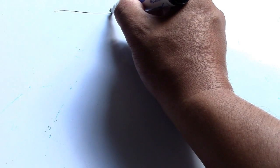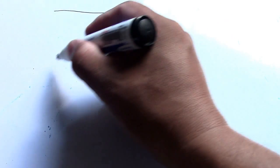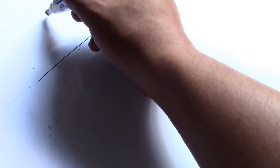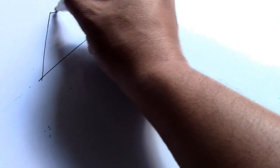Hi guys, welcome back to Piping Welding and DT channel. This is a layout for a 45-degree angle iron bracket. We have dimensions shown here.